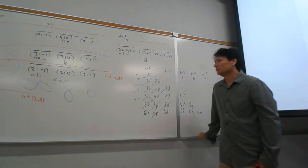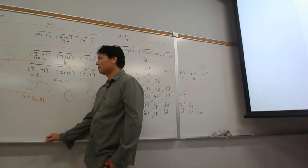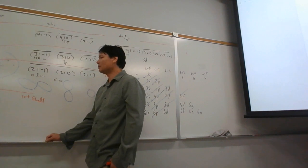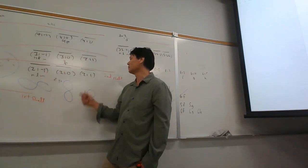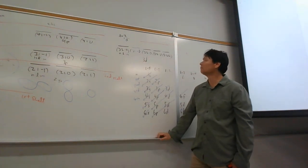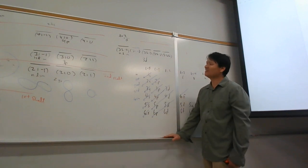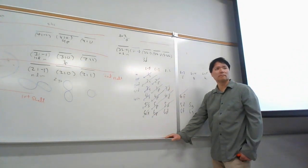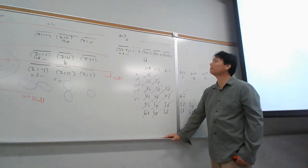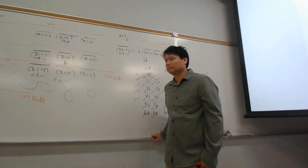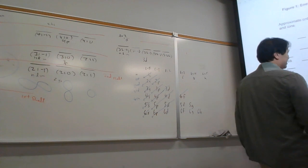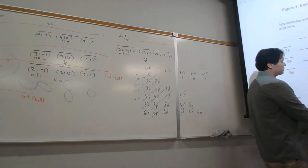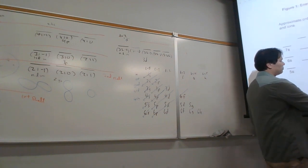How many orbitals are there in a sub-shell? The s sub-shell has one orbital, the p sub-shell has three, and the d sub-shell has five. For the d sub-shell with n equals 4, those would be 4,2,-2 and 4,2,-1 and 4,2,0 and 4,2,1 and 4,2,2 - five orbitals total.